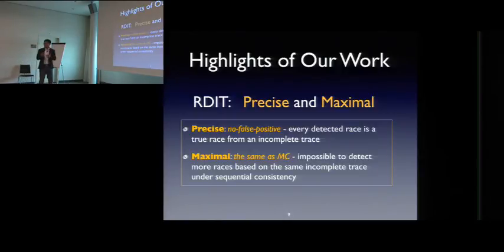So the highlight of this work is we developed a tool for ARTISAN race detection from incomplete trace, which is precise and maximal with regards to missing events. Precise means no false positive. Every detected race is true race from an incomplete trace. The same guarantee as maximal causality, impossible to detect more races based on the same incomplete trace and sequential consistency. So the limitation of this work is we have assumption of sequential consistency.